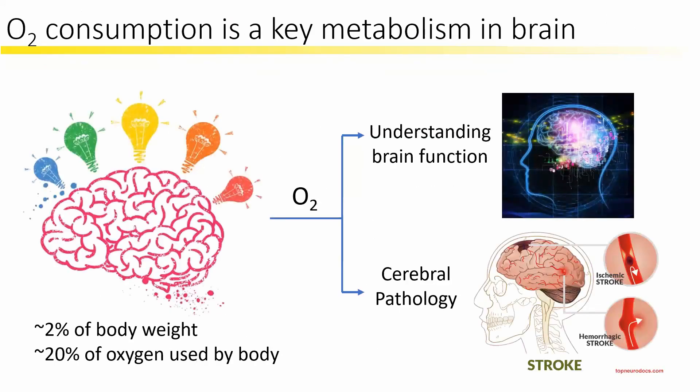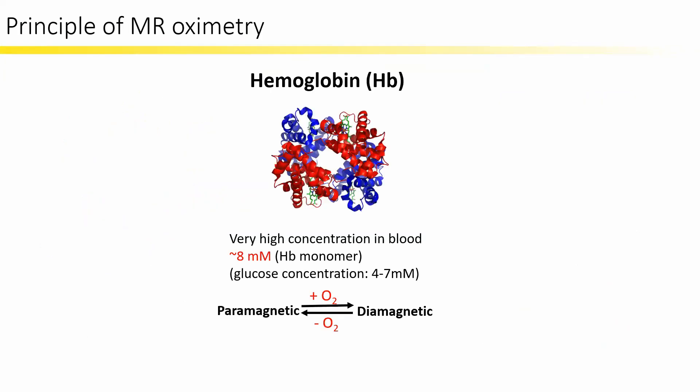Oxygen is very important for brain function and disease. MRI is a powerful tool to measure oxygen content in the brain based on hemoglobin, which is a very natural contrast with very high concentration in blood, and whose magnetic properties highly depend on oxygen binding.